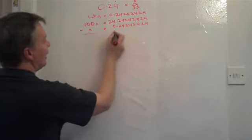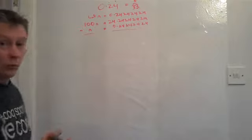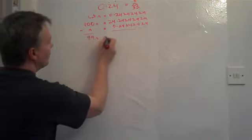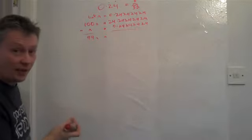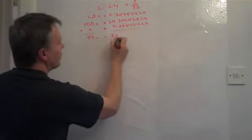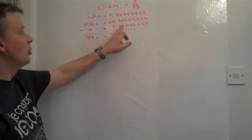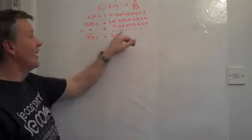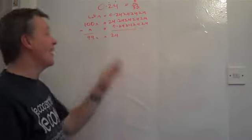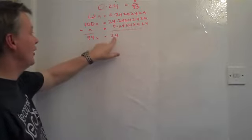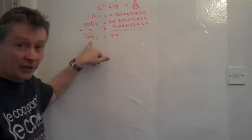Or in other words, if I take those two sides one away from the other, I get 99N at this side. Because 100N take away N is 99N. And on this side, I get 24. Because 0.2424 and so on recurring, take away 0.2424, just cancels each other out. So I get left with a value of 24 and a value of 99N.